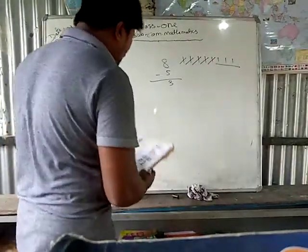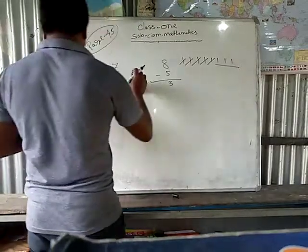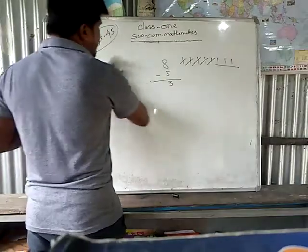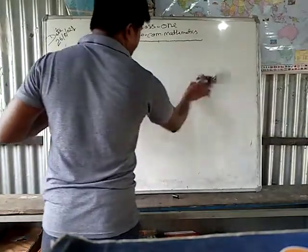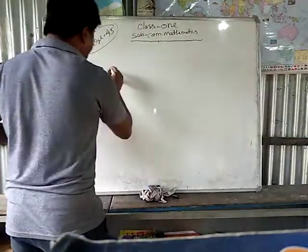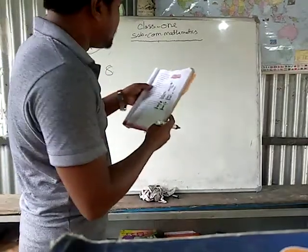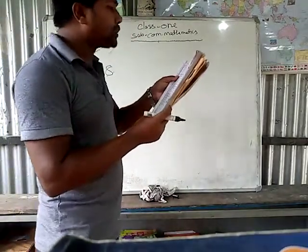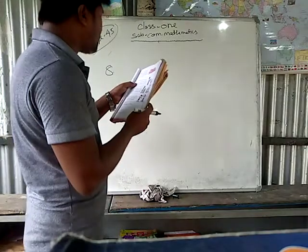Number 2, do it the same way. Now, number 8 — you see here. There were 9 flowers on a plant.